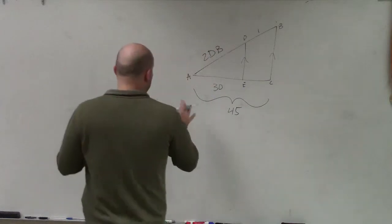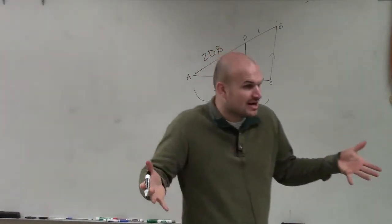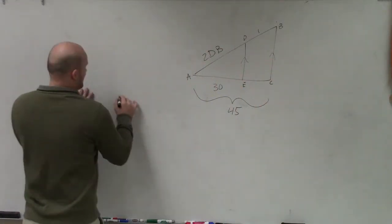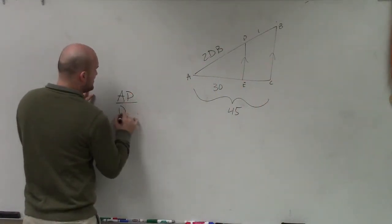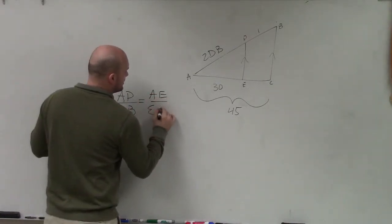what we're looking at here is we know that we need to find the ratio. For these to be parallel, for these proportions to be parallel, we have to have AD is to DB is equal to AE is to EC.